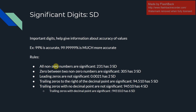When looking at significant digits, we have a couple of rules. All non-zero numbers are going to be significant — for example, the number 231 has three significant digits since all digits are non-zero. A zero in between two non-zero numbers is also significant: 305, 909, or 101 all have three significant digits. If you have a leading zero, it is not significant — so 0.0021 has two significant digits, 0.0001 has one, and 067.3 has three significant digits.